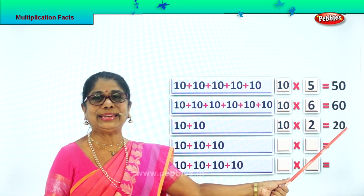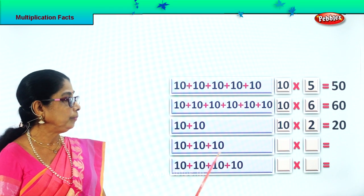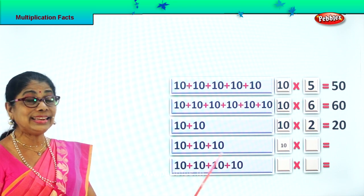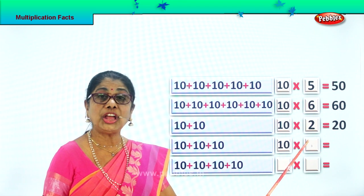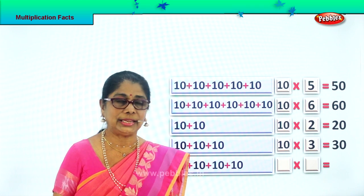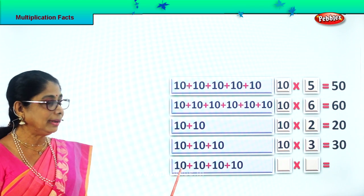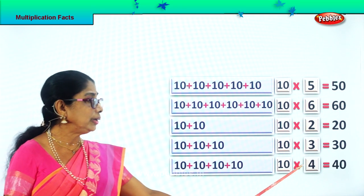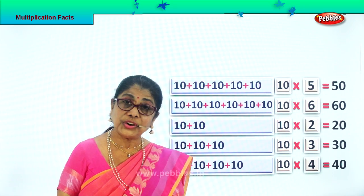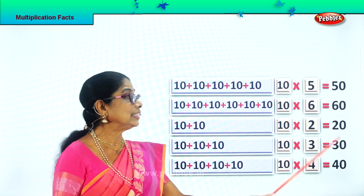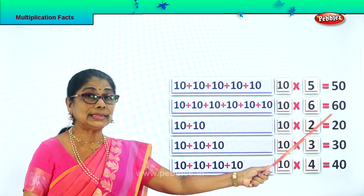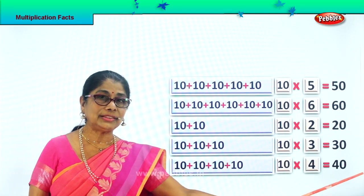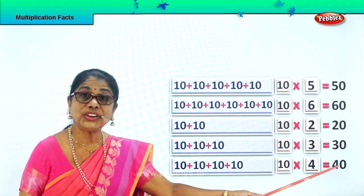Ten twos are 20. Here ten how many times? 1, 2, 3. Ten three times. Ten into three is 30. Ten threes are 30. Good. Here ten into 1, 2, 3, 4. Ten four times. Ten into four is 40. Ten fours are 40. This is our multiplication fact. Ten fives are 50. Ten sixes are 60. Ten twos are 20. Ten threes are 30. Ten fours are 40.